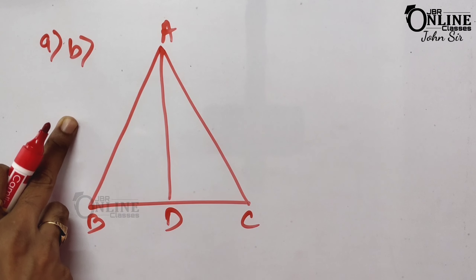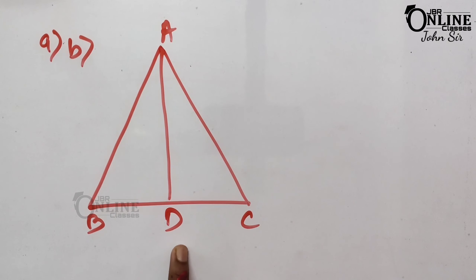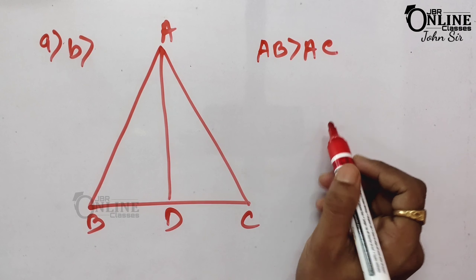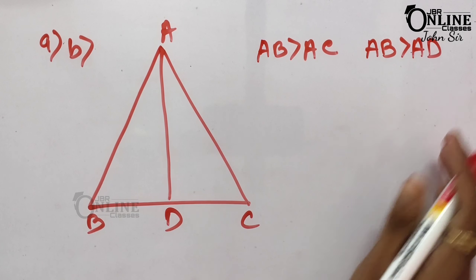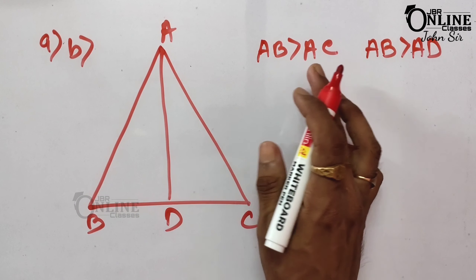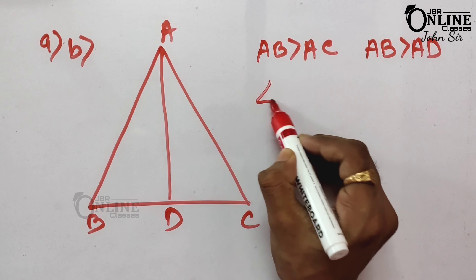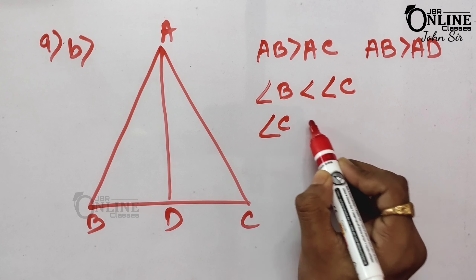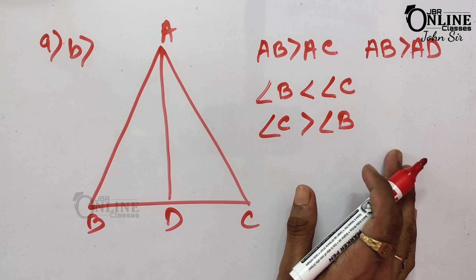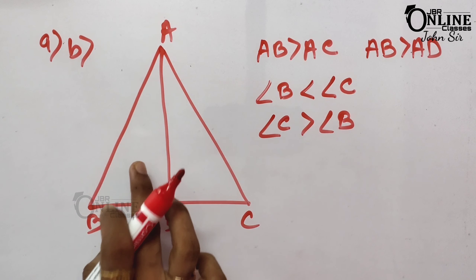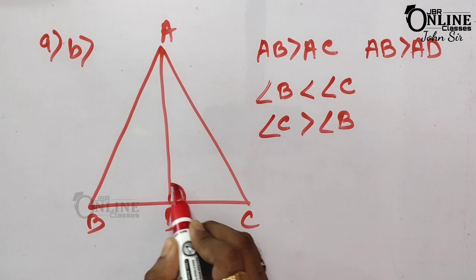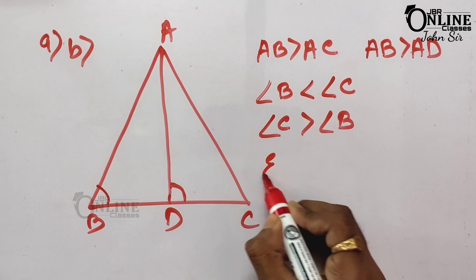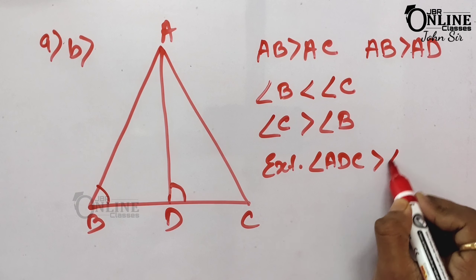Next, sum number 9B. Here D is any point on side BC of triangle ABC. Given AB > AC, we have to show that AB > AD. Since AB > AC, the opposite angles satisfy angle C > angle B.